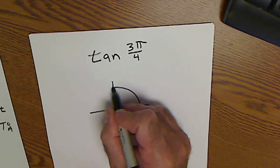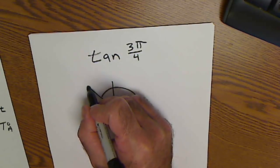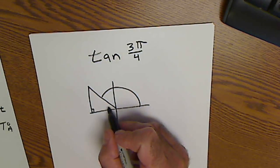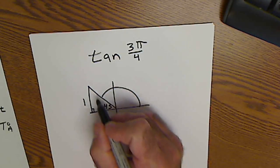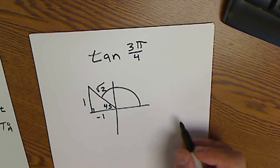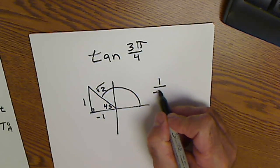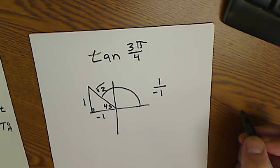My reference angle is 45. Reference triangle 1, 1, root 2. Don't forget the negatives. Tangent is opposite over adjacent, and my solution is negative 1.